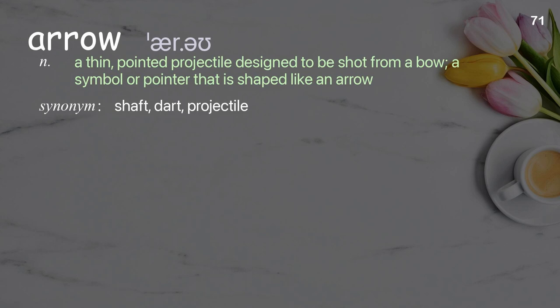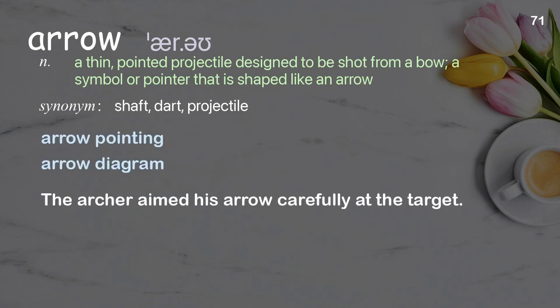Arrow: a thin, pointed projectile designed to be shot from a bow; also a symbol or pointer that is shaped like an arrow. Examples: arrow pointing, arrow diagram. The archer aimed his arrow carefully at the target.